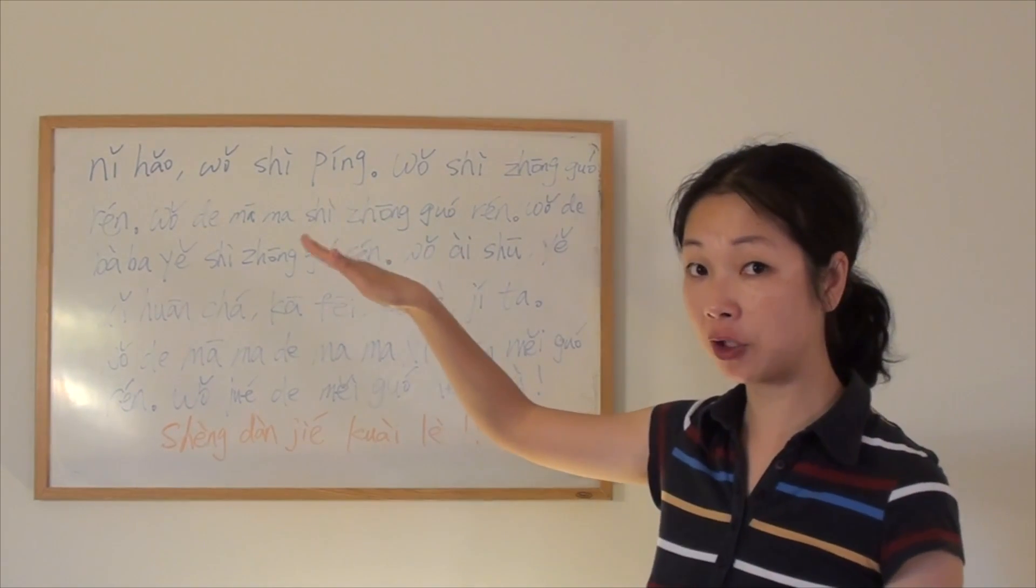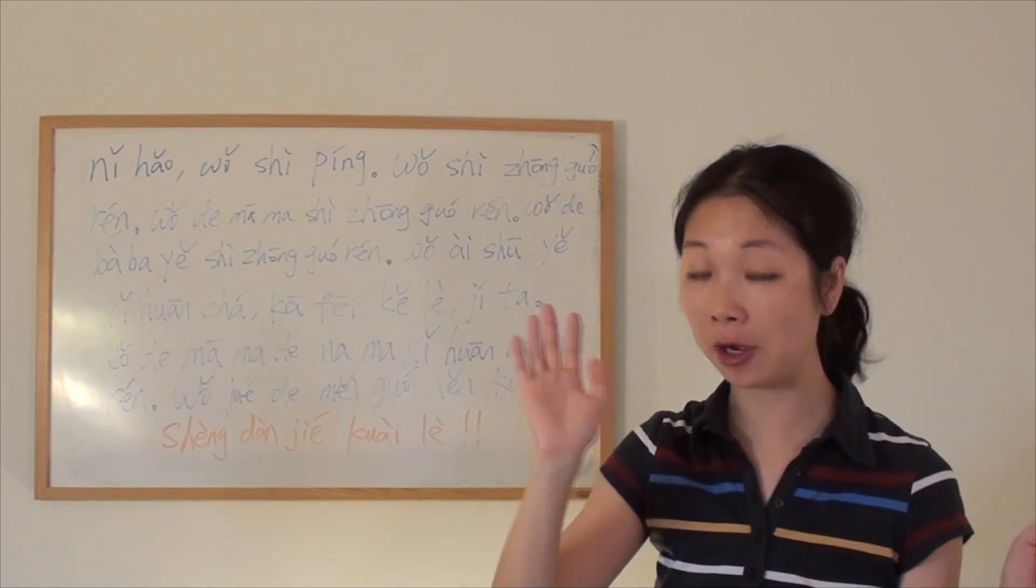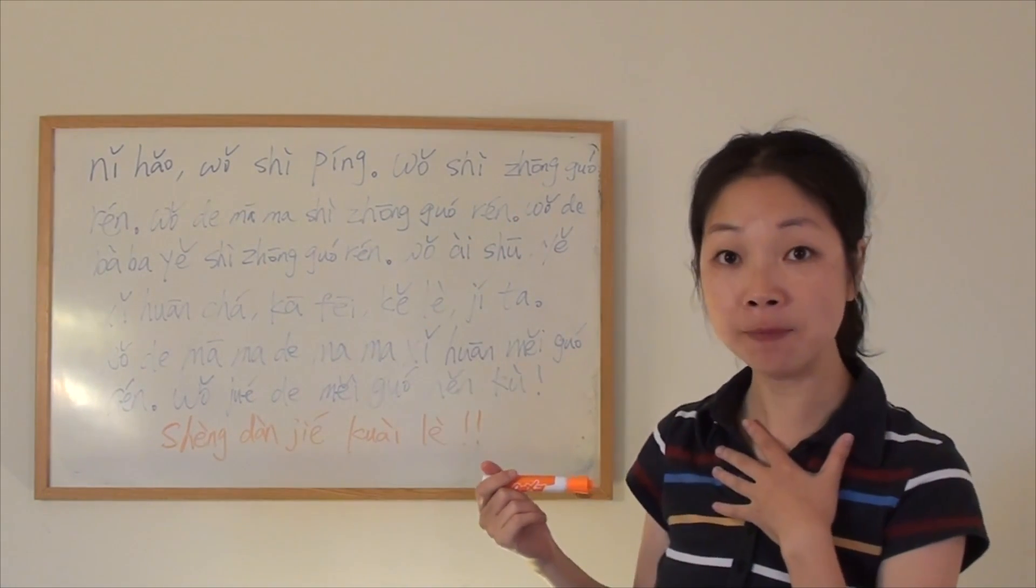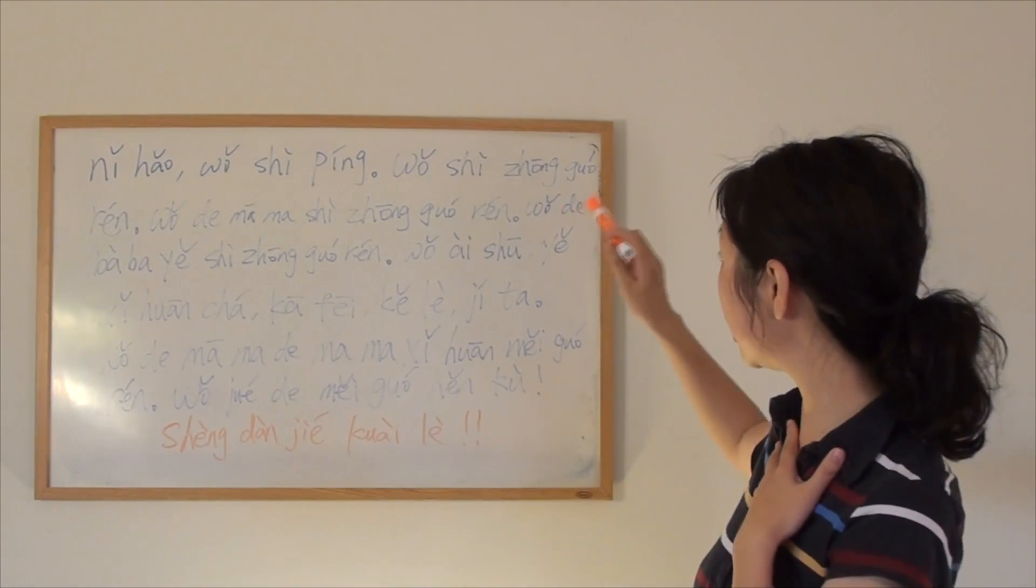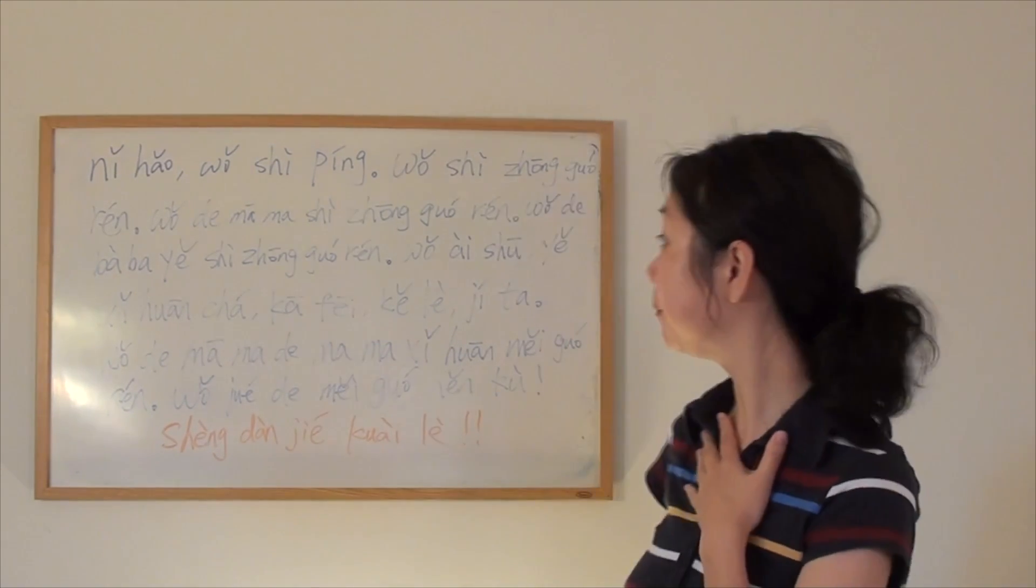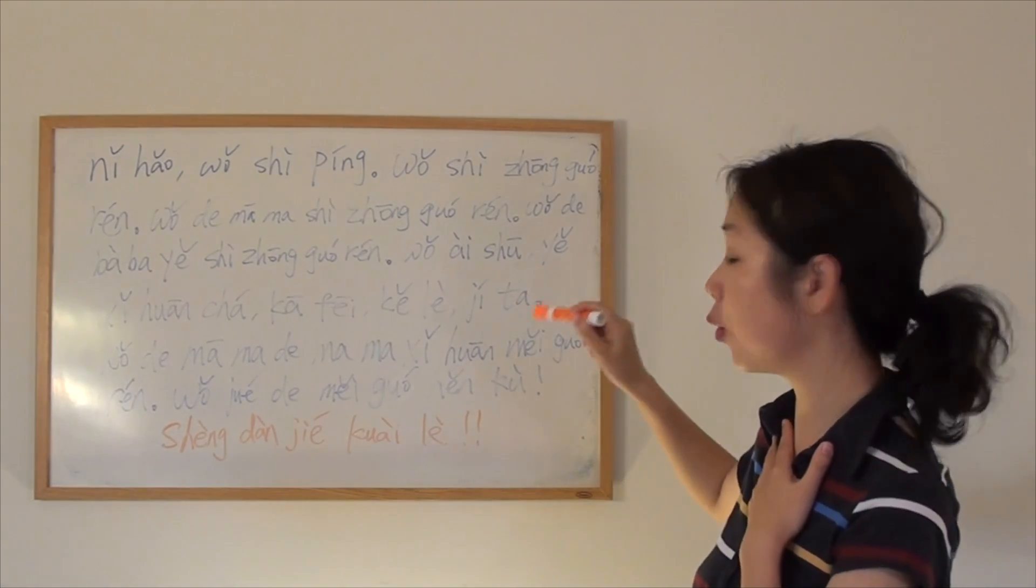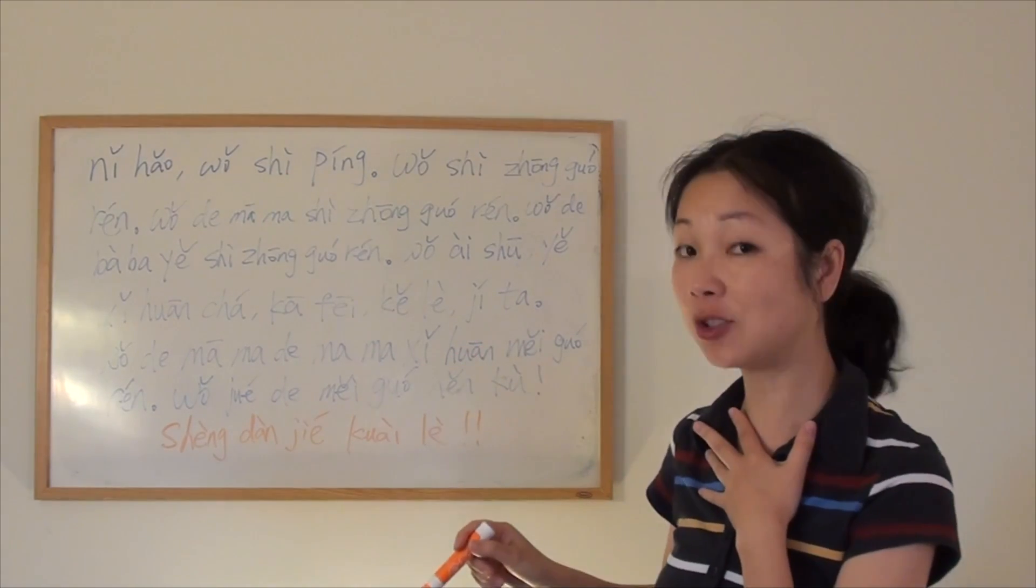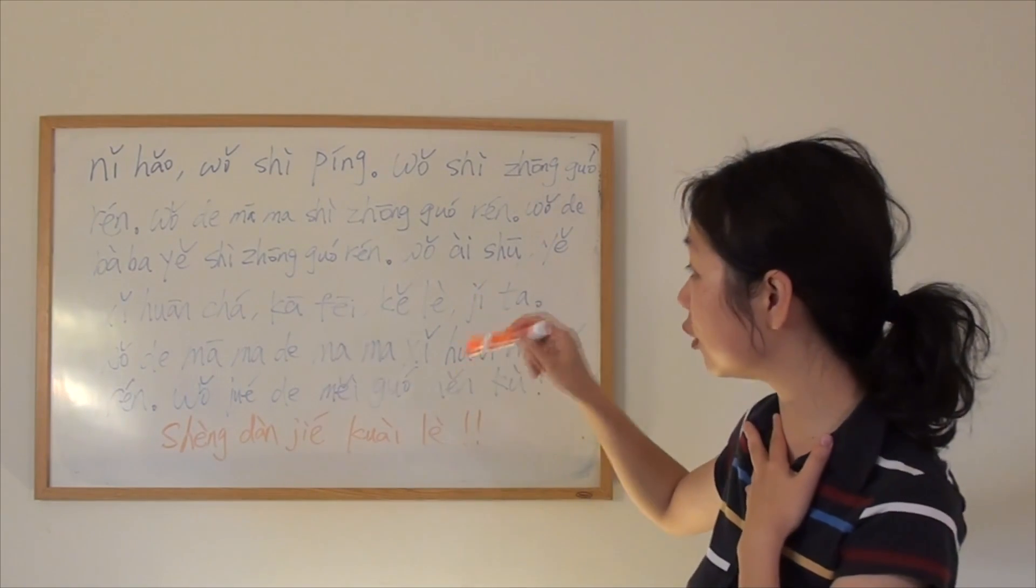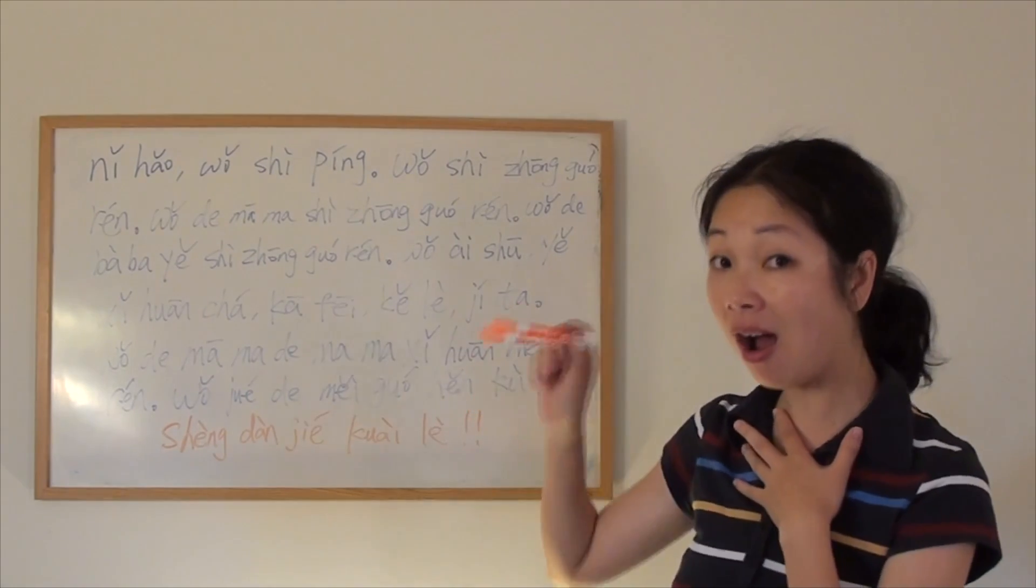你好, we haven't learned officially, but every time I said 你好, 你好 means hello. Chinese people say hello or hi, 你好. 我是平, I am Ping. 我是中国人, I am Chinese. 我的妈妈是中国人, my mom is Chinese. 我的爸爸也是中国人, my dad is also Chinese.